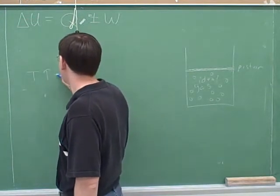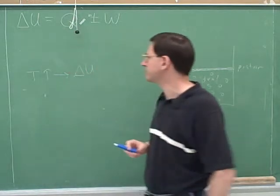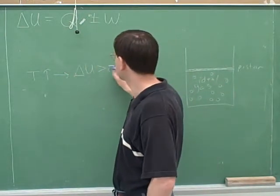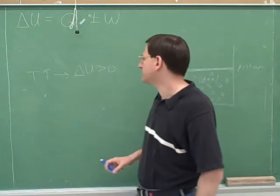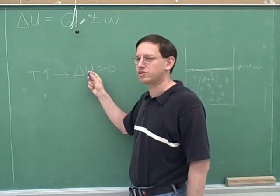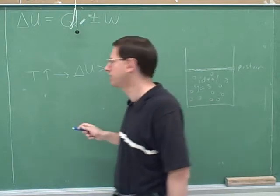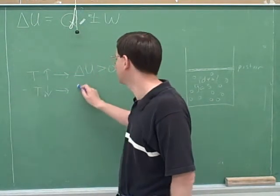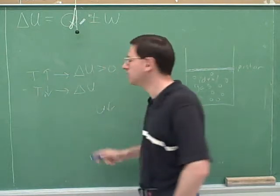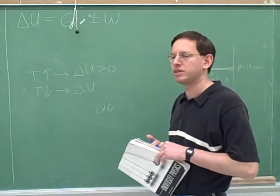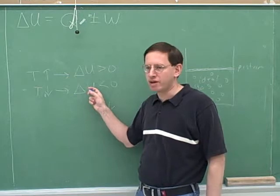If we increase the temperature, should delta U be positive or negative? Positive. Notice it doesn't make sense to say that when you increase the temperature, you increase delta U. Delta U tells you about the change. What we want to say is that when you increase the temperature, delta U is positive. And if you lower the temperature, it would tell you that U is decreasing — meaning you have a negative delta U.